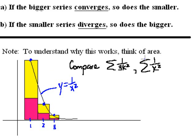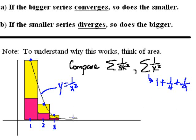For the series 1 over k squared, we have a rectangle with a base of 1 and a height of 1, because 1 over 1 squared is 1 — so the first term is 1. The second term has a base of width 1 and a height of 1 fourth, since when k is 2 we get 1 fourth. That gives us an area of 1 fourth for this rectangle, ending at the curve y equals 1 over x squared. Then the next rectangle would be 1 over 3 squared or 1 ninth unit high, but 1 unit wide, so its total area is 1 ninth, and so on. You can imagine the series 1 over k squared as the total area of all these rectangles.